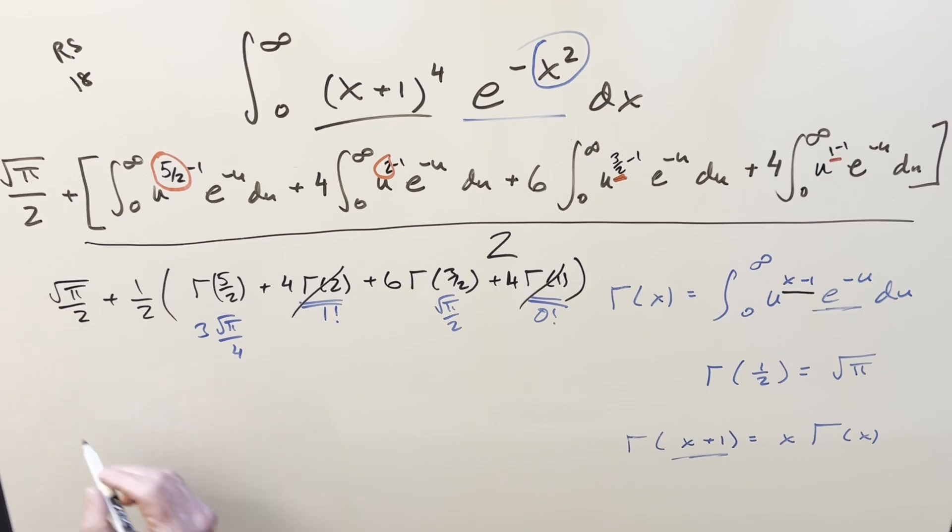So now all that's left is we just need to add everything up. So we have square root of pi over 2, distribute in the 1/2 to everything. Here it becomes 3 square root of pi over 8. Here we have a 4 times a half is a 2, plus half times 6 is 3 square root of pi over 2. And here, 4 times half plus 2.